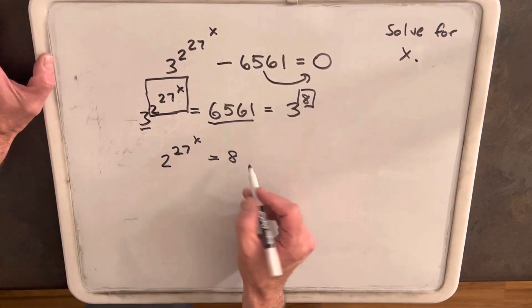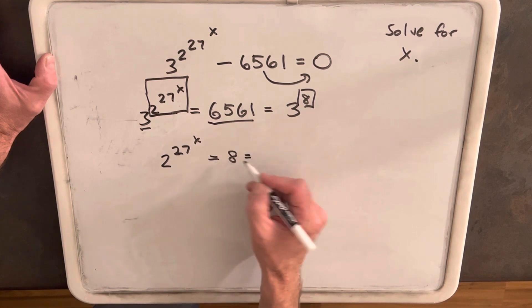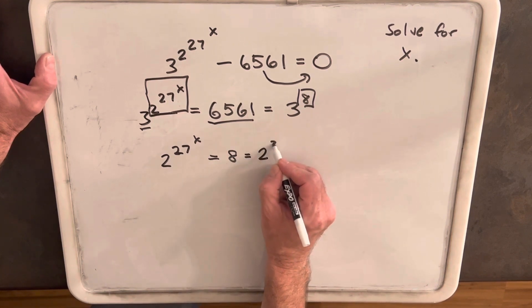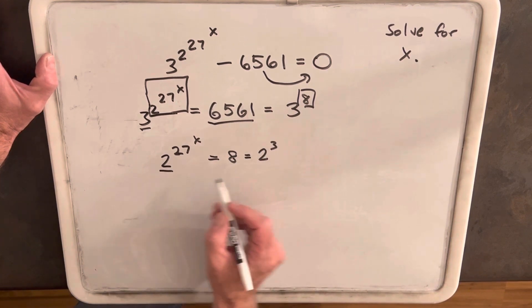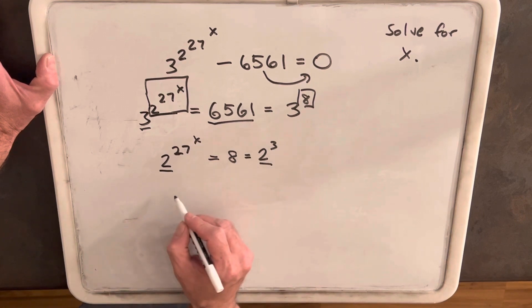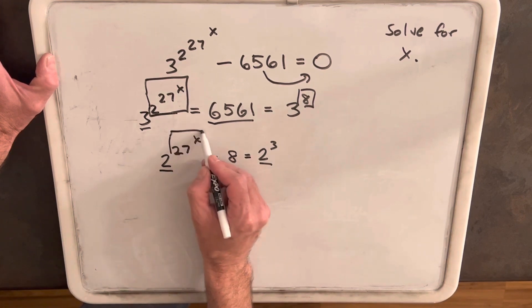Then we can actually do the same trick again. The prime factorization of 8 is just 2 cubed. And so again, we have the same base, right? We have 2 and 2, so we can compare exponents again.